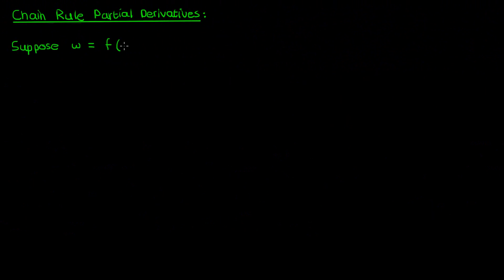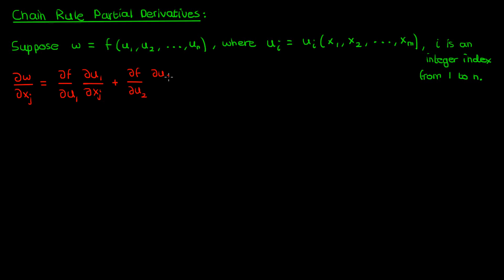Suppose that w is a function of n variables u where the variable ui is itself a function of m variables x. i varies from 1 to n. If this is the case, then the partial derivative of w with respect to xj, where j is an index between 1 and m, is given by the following.